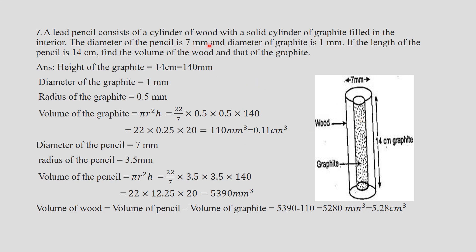For finding the volume of the wood, first find the full volume of the pencil. The volume of the pencil includes both wood and graphite. Diameter of pencil = 7 mm, so radius = 3.5 mm. Volume of pencil = pi r squared h = 22/7 into 3.5 squared into 140 = 5390 mm cube. Volume of wood = 5390 minus 110 = 5280 mm cube, which converts to 5.28 centimeter cube.